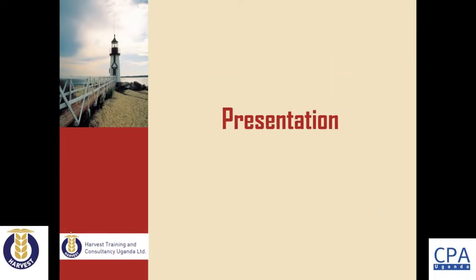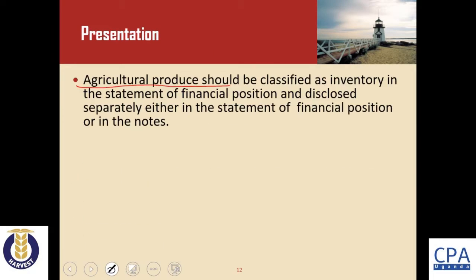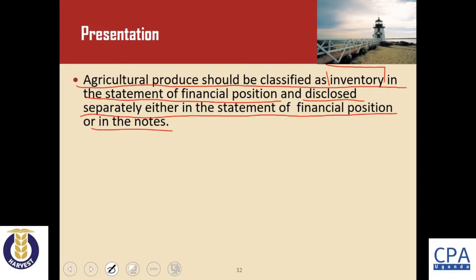Looking at the presentation requirements in Accounting Standard 41: agricultural produce should be classified as inventory in the statement of financial position, and disclosed separately either in the statement of financial position or in the notes to the financial statements.